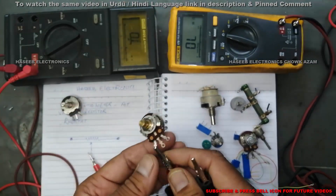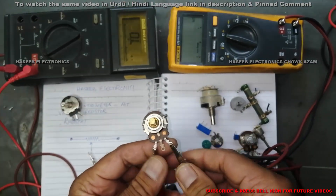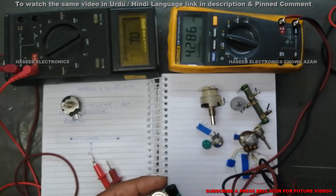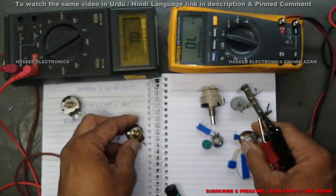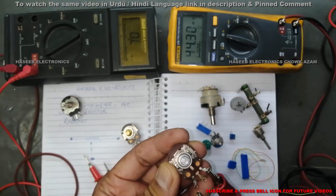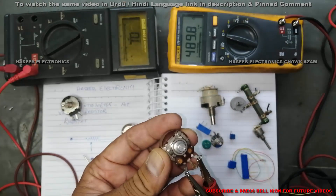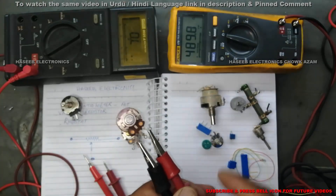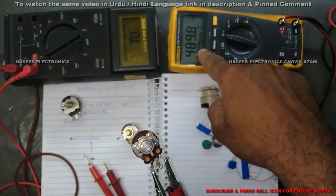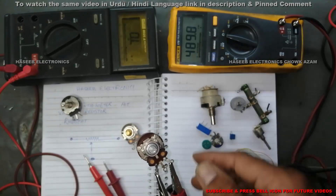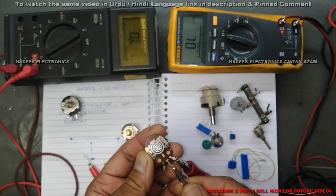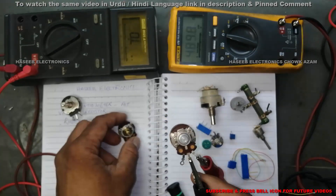The resistive value of every potentiometer may be different. The previous one was five kilo ohms. This one is also five kilo ohms. Now I will check another one — this one is 500 ohms.